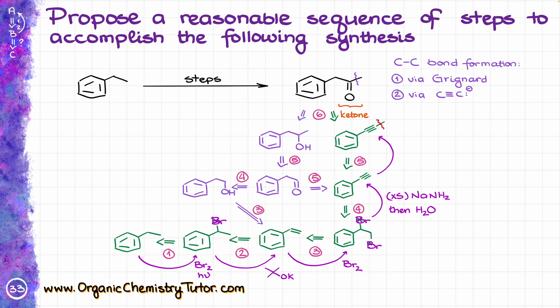Then we are going to add our methyl group. We'll do so by first treating the alkyne with sodium amide to deprotonate the terminal alkyne, and then treating that with CH3I — methyl iodide — doing a simple SN2 reaction to add the methyl group to the alkyne.